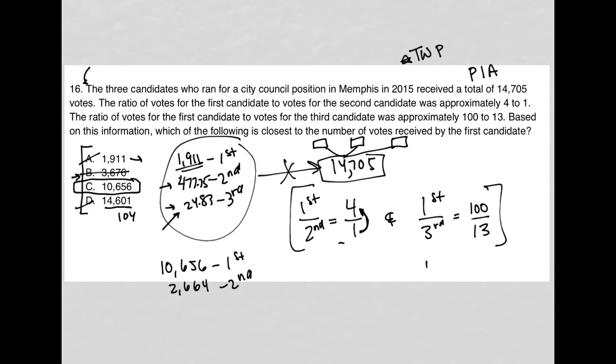And the third candidate will do this ratio thing again, because it's not as easy to multiply. So I'll say the first was the 10,656. The third is, I don't know, but we know that it has to fit this ratio. So again, I'd have 100x equals 10,656 times 13, which is 138,528. We divide both sides by 100, and we get x equals 1385.28. So 1385, basically, for the third candidate.